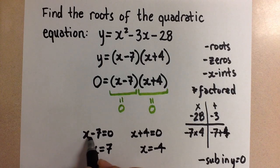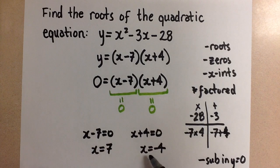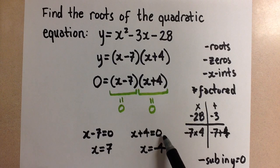So we see how if we put a positive 7 here, 7 minus 7 equals 0. And if we put a negative 4 here, negative 4 plus 4 gives us 0.